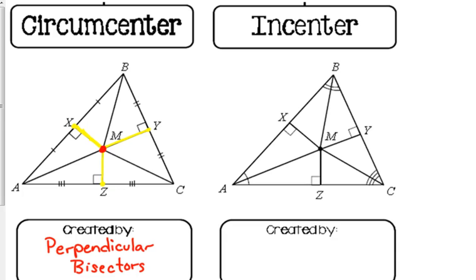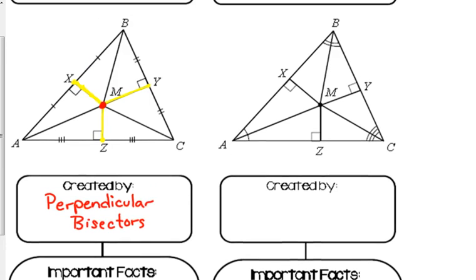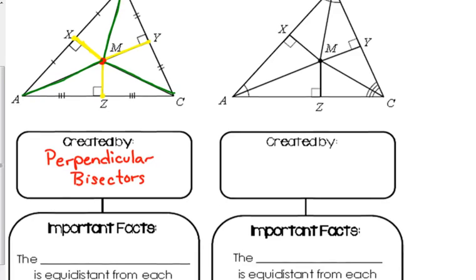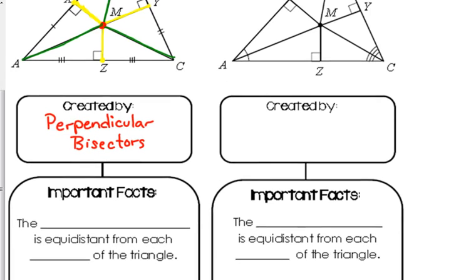Now the special property about the circumcenter, and I think you can kind of see it in the picture here, is the circumcenter is the same distance from each of the vertices. From M to A, from M to B, and from M to C, that is all the same distance.